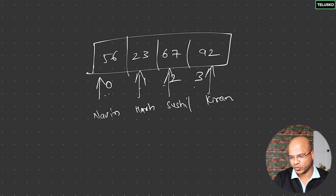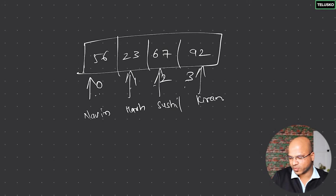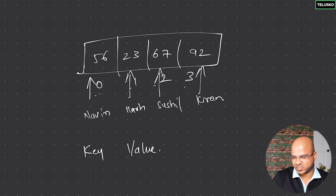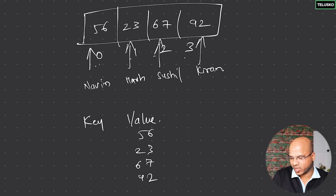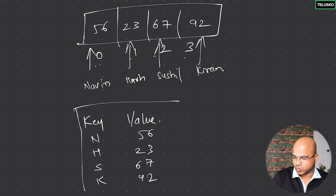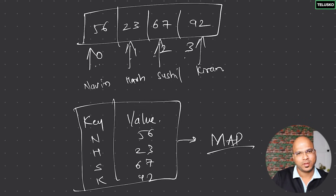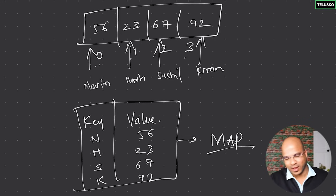Yes, that is possible with the concept of a key-value pair. We have a key and a value. The values 56, 23, 67, 92 are the values, and the keys are Naveen, Harsh, Sushil, and Kiran. We can achieve these two things in one data structure called a Map. Map is a collection of key-value pairs.